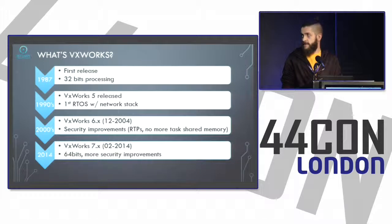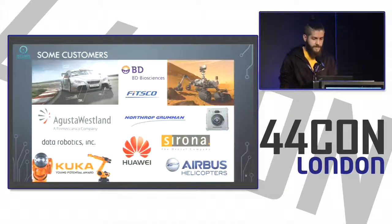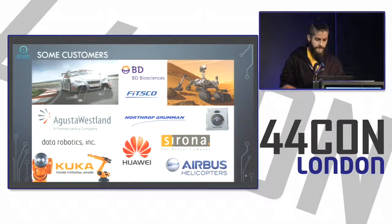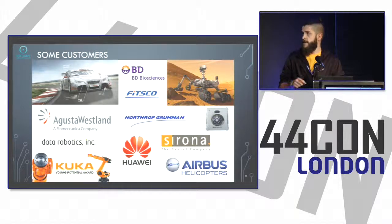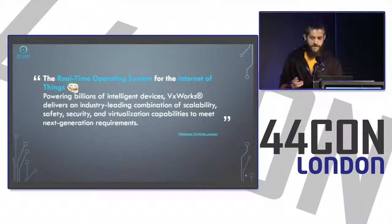In 2014, VxWorks version 7 was released with 64-bit instruction support and way more security features. VxWorks is found in many domains: automobile, aerospace, defense, space — for example the Mars Rover runs VxWorks. Also robotics, network equipment, VOIP phones, and Airbus aircraft. VxWorks 7 is also being claimed as the OS for the new trend, the Internet of Things.